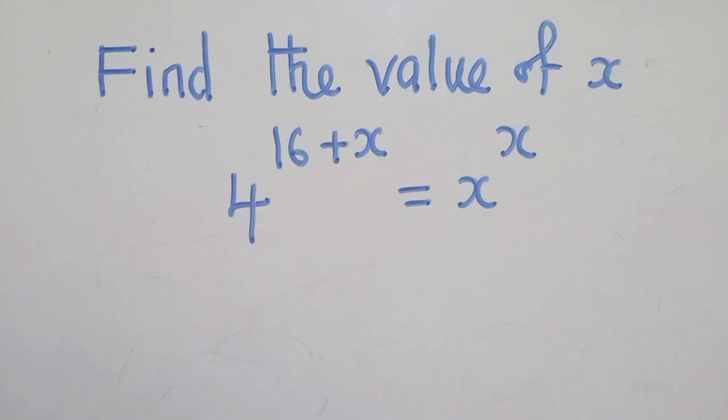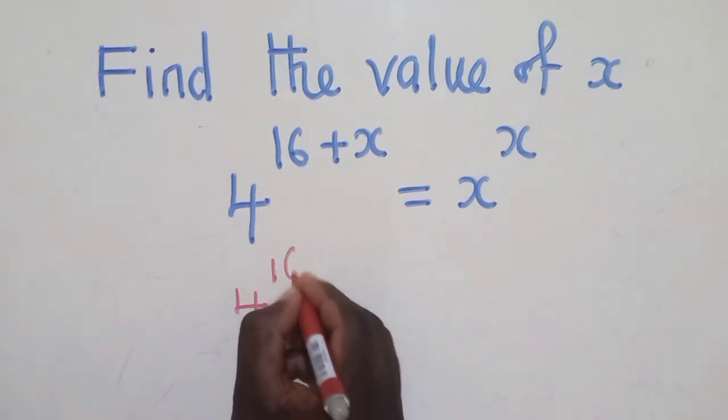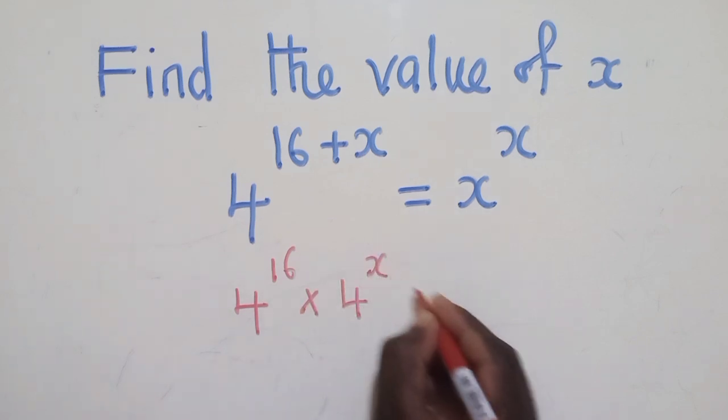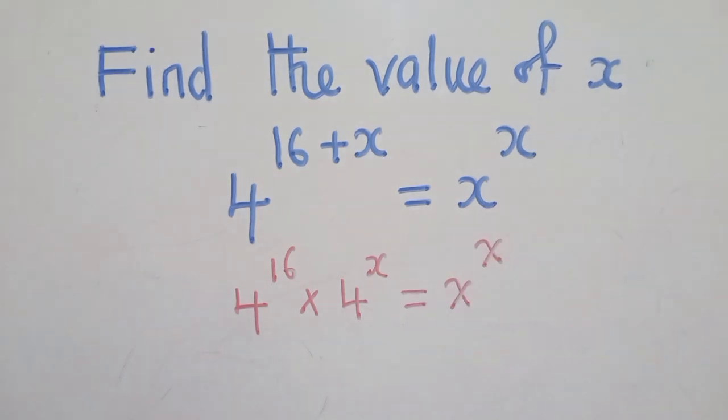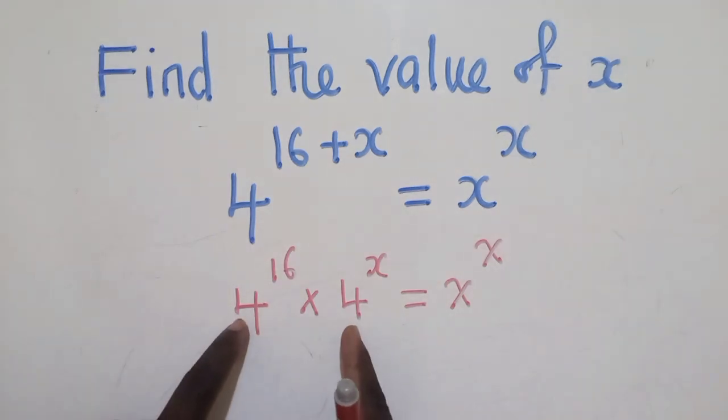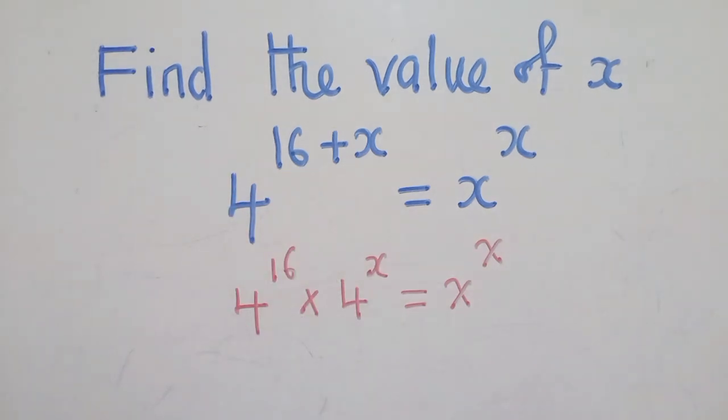The first thing that we must do is to write this as 4^16 times 4^x is equal to x^x. Hopefully you know the property which I've used - when you are multiplying the same bases, you add the powers. I've just reversed this one to this.